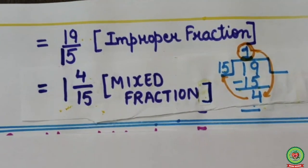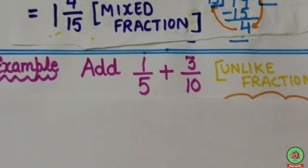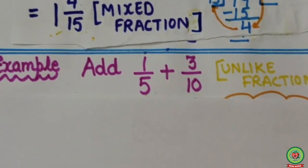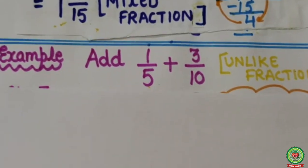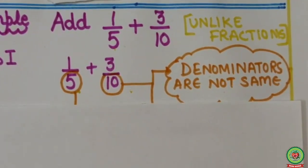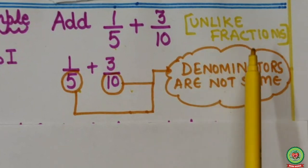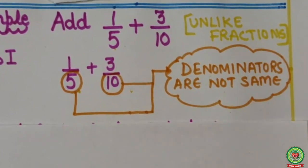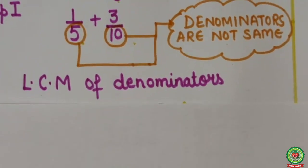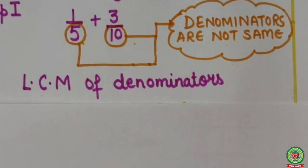Now let's take one more example. Here we have to add 1 upon 5 and 3 upon 10. First step: check the denominators. Here denominators are 5 and 10. Denominators are not same. Therefore, these are unlike fractions. Now Step 2: LCM of denominators. Here denominators are 5 and 10.